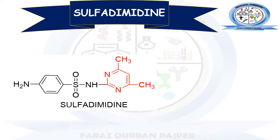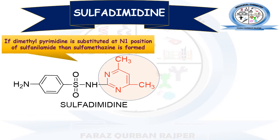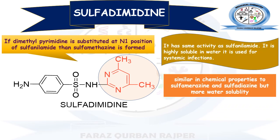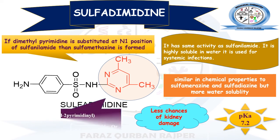The next derivative is Sulfadimidine. Sulfadimidine is the dimethylpyrimidine derivative of sulfonamide. When dimethylpyrimidine is substituted at the N1 position, Sulfamethazine or Sulfadimidine is formed. Its spectrum of activity is similar to sulfanilamide, but it is highly soluble in water, and that is why it can be used for systemic diseases. Its chemical properties are similar to Sulfamirazine and Sulfadiazine, but it has greater water solubility, resulting in fewer chances of kidney damage. Its pKa value is 7.2.